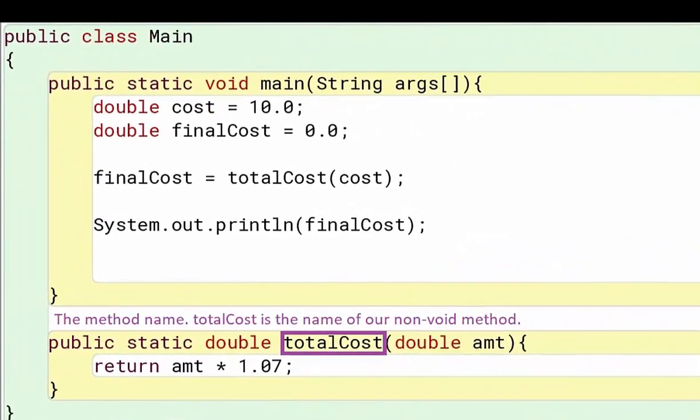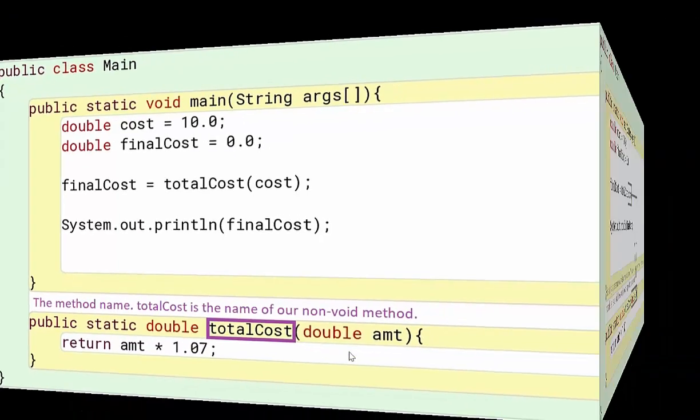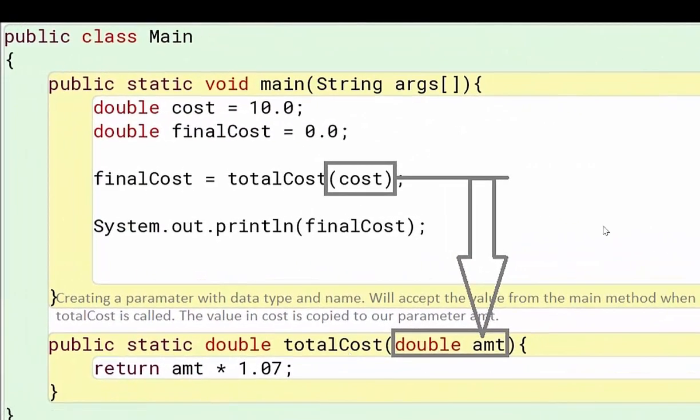After you have that, you have the method name. TotalCost is the name of our non-void method. We have a return type, double, and we have our method name, totalCost. When I create my method, I also need what's called a parameter. We're creating a parameter with a data type and name. Here I have the data type double with my variable name, amt. Now the reason I don't need to assign it a value like I do up here is because it's being set a value.